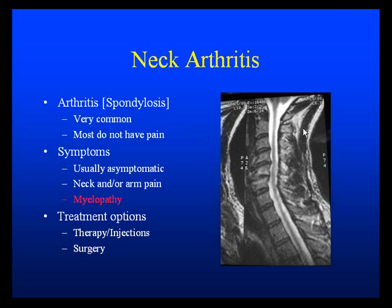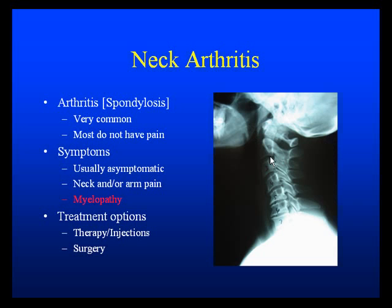Here's an example of an MRI of the neck. We can see that the spinal fluid looks pretty nice down here and reasonably okay up here, but over here where the neck has a lot of arthritis, we can see that there's some pressure coming over and tightening the area.